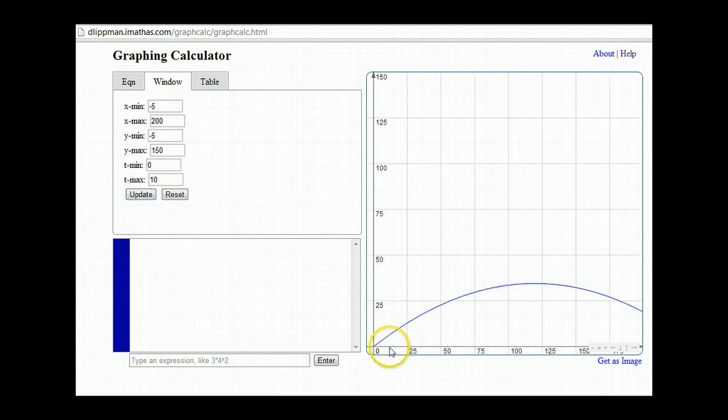So now notice I have what looks like the path of a projectile. The projectile goes up in the air and then starts to come back down. Now notice here my y value that I had for my window is way too high, it doesn't even go past 50. So I'm going to come back and adjust my maximum y down to 50.